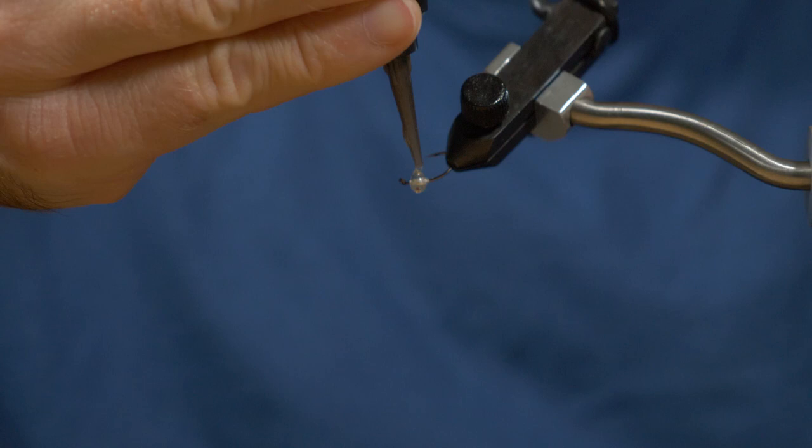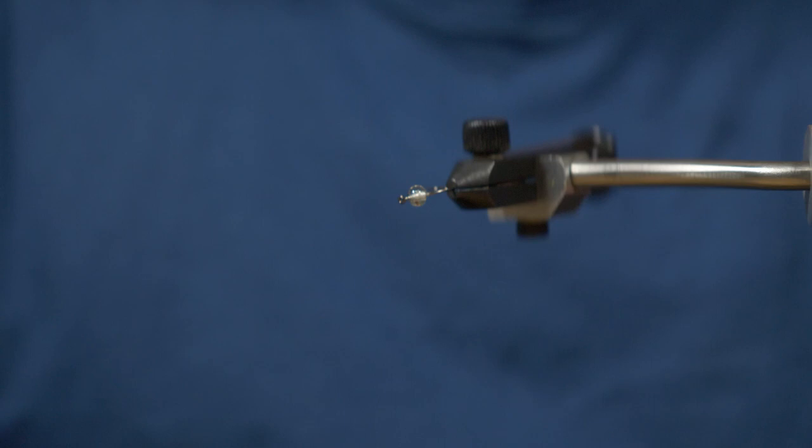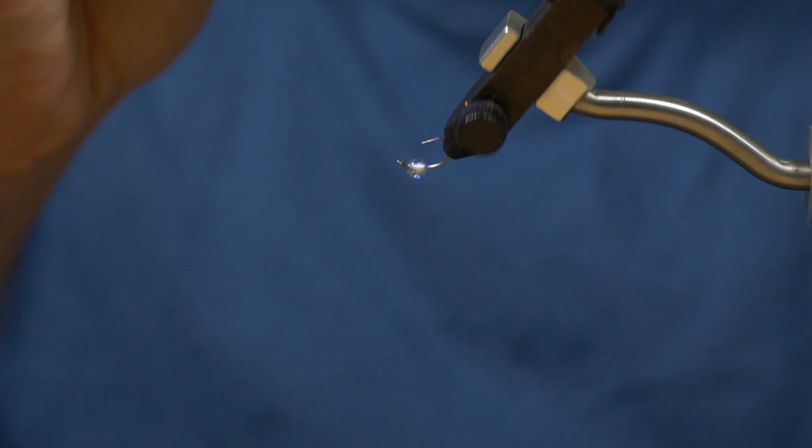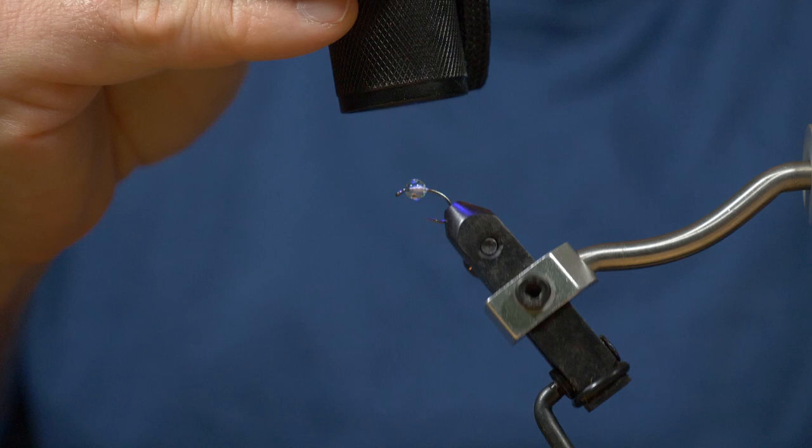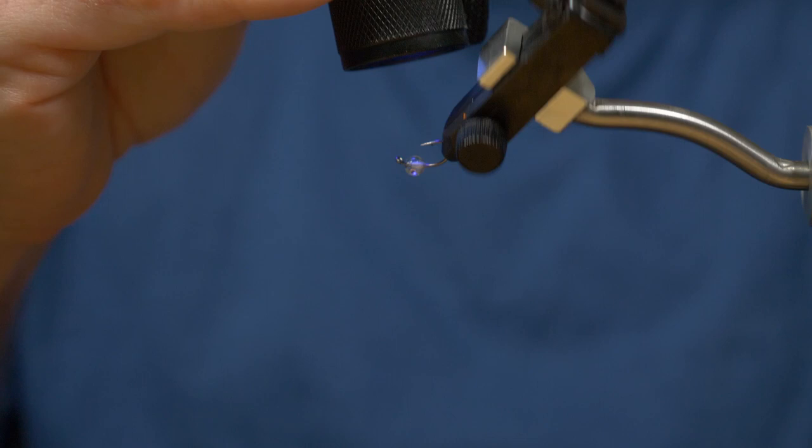This is the main bulk of it, so just rotate it to keep that even and then hit it with the UV light to lock it in place. Make sure you hit it with the UV light long enough. There's a lot of resin in there, so make sure you cure that reasonably well.